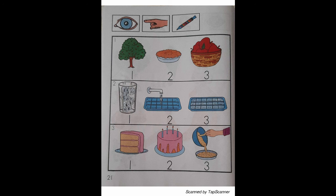Look at row 3. With your finger, point to each picture that shows what happened to the cake first, second, and third. With your marker, draw a line from what happened to the cake first to number 1, second to number 2, and third to number 3.